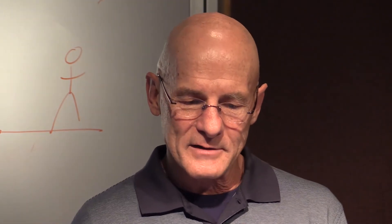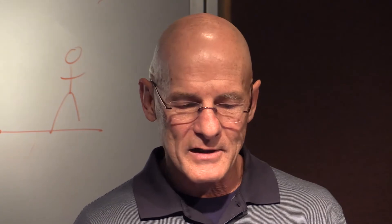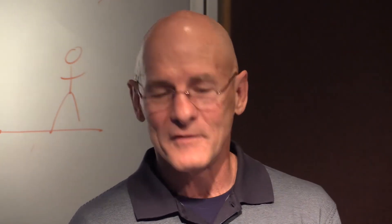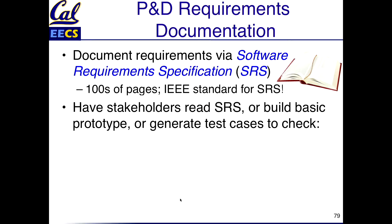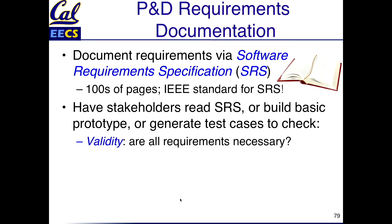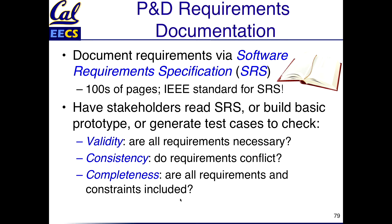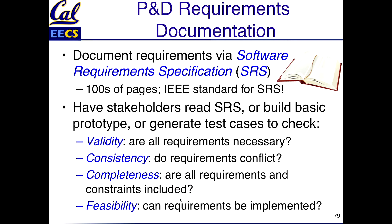How do you figure out if the SRS is okay? You can have the customers read these hundreds of pages and give feedback, build a prototype with some features, or generate test cases to test the SRS. You're looking for four things: validity — are all the requirements necessary? Consistency — requirements shouldn't conflict. Completeness — is everything there and are all constraints included? And finally, can it be implemented? You're building a kind of book about the project before you build the project.